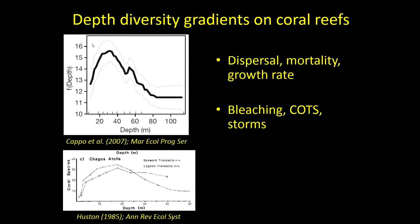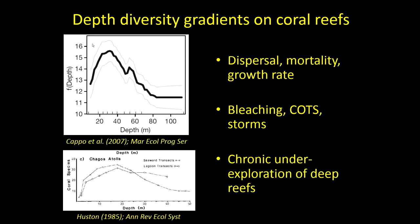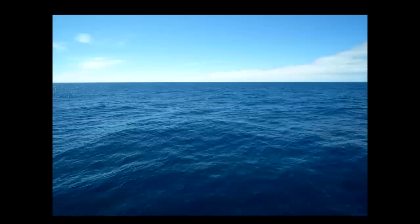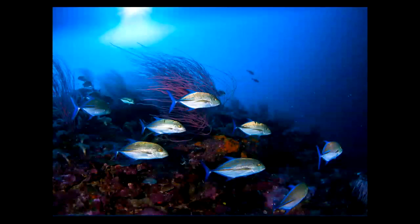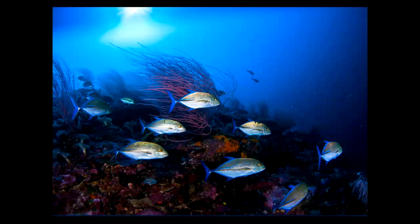Understanding these relationships is important for predicting how species may respond to change in the future. The problem is we've got a chronic under-exploration of deep water coral reefs - especially once we get below 30 metres, we have very little idea about the biodiversity and particularly the ecological processes operating in these deeper habitats. To most people, when you look at a mesophotic reef, they're often a long way offshore, located on submerged banks, with the top maybe 30 to 50 metres below the surface. This is more what a mesophotic reef looks like to me - this is Papua New Guinea - an incredibly diverse and beautiful marine ecosystem.